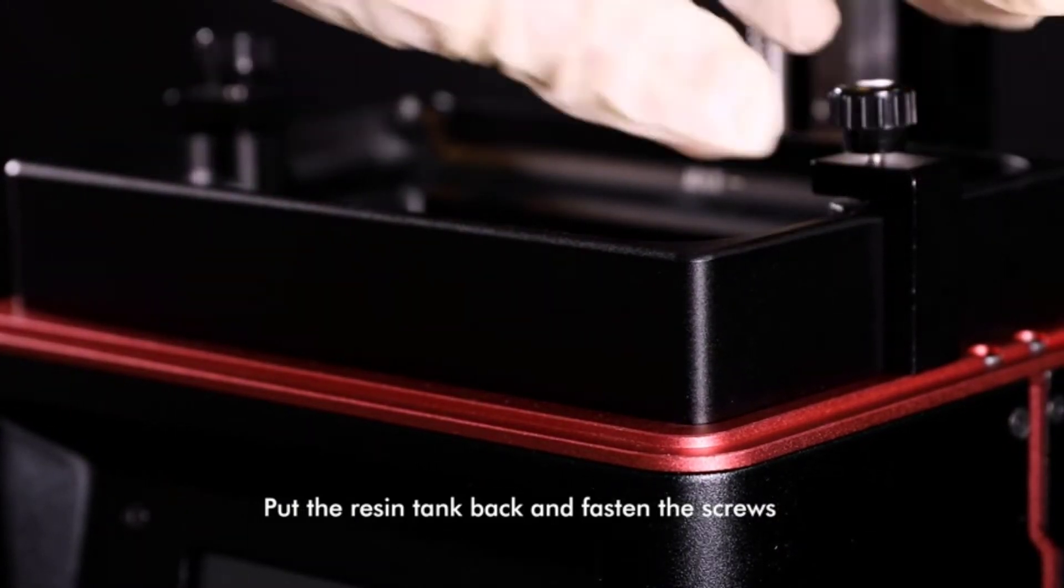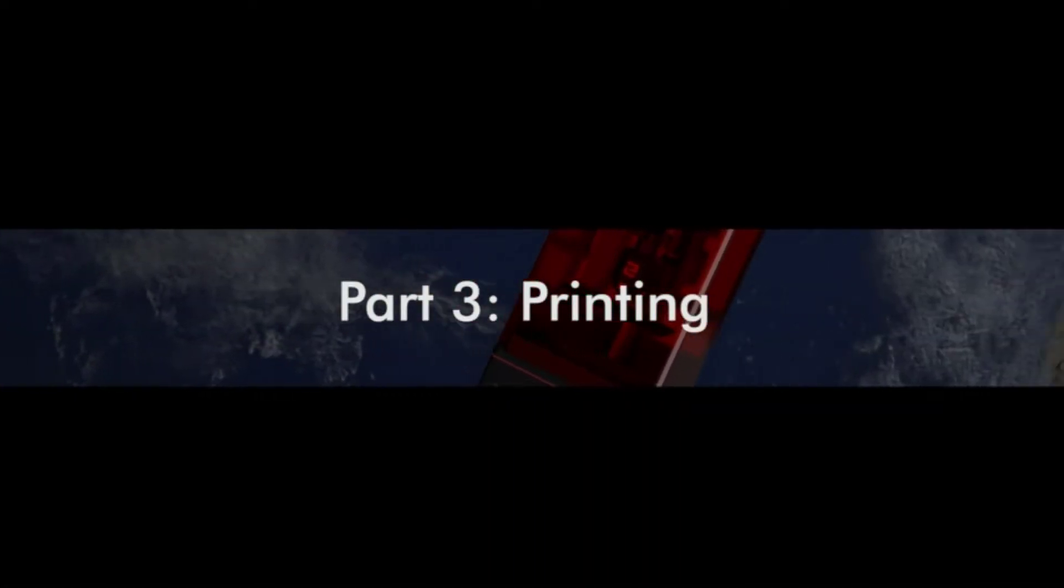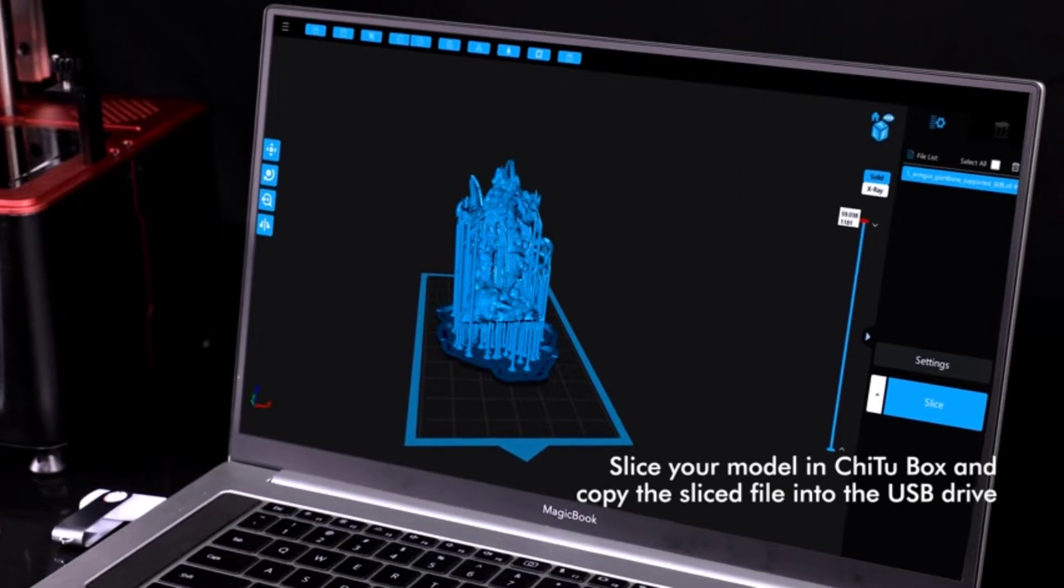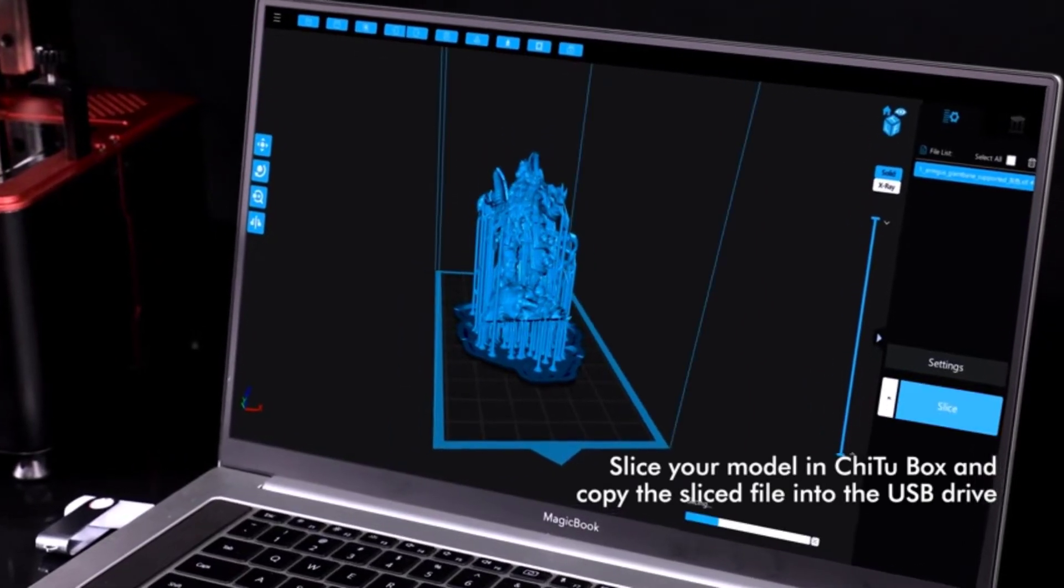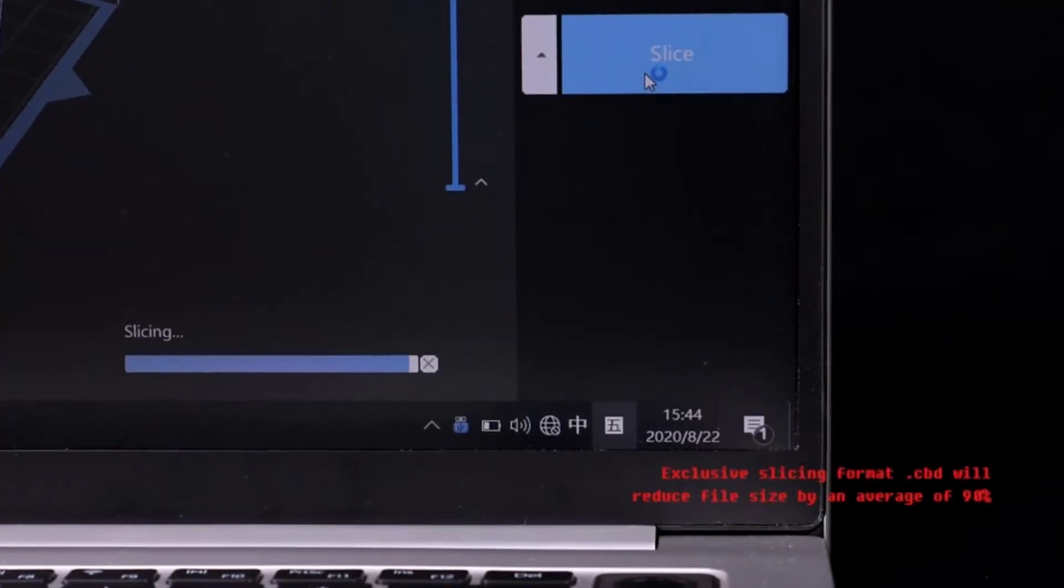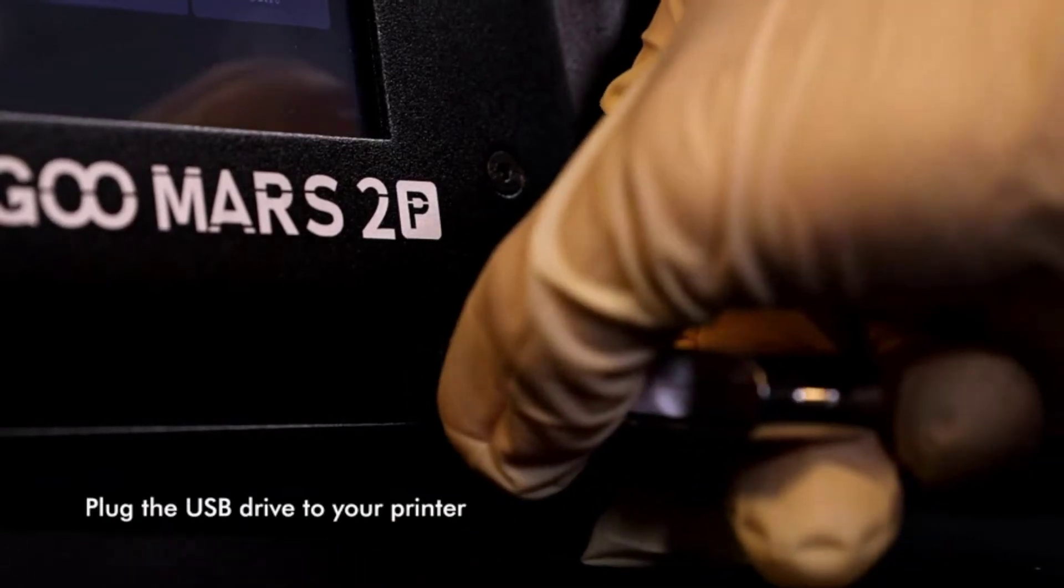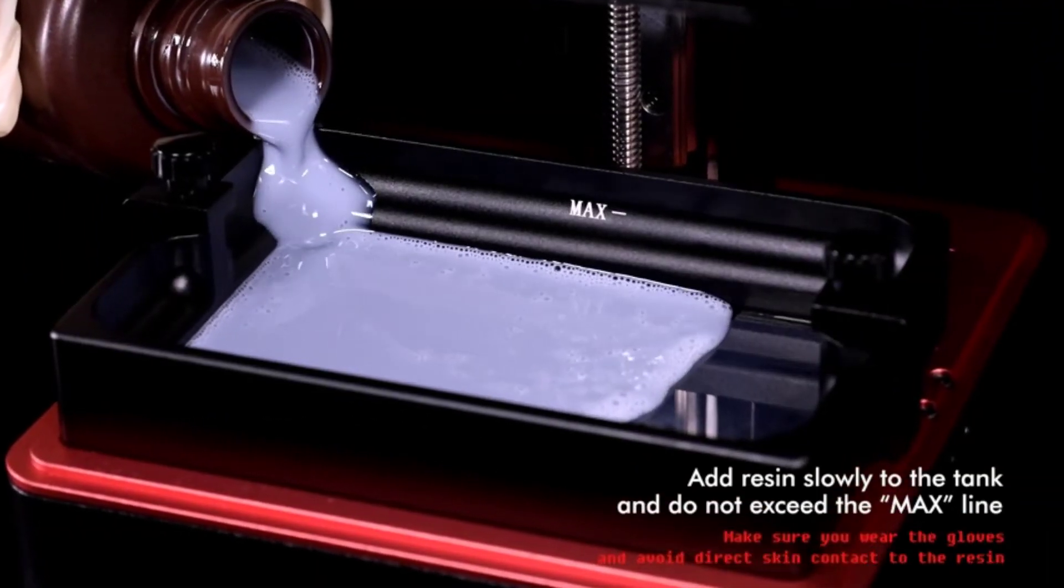Disappointingly, you won't find protective glass around the LCD screen, so you'll need to be extra careful to avoid scratches. Ultimately, the Elegoo Mars 2 Pro is the best overall budget resin 3D printer for most makers.